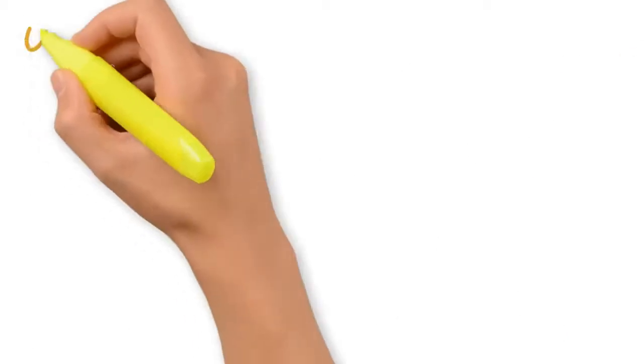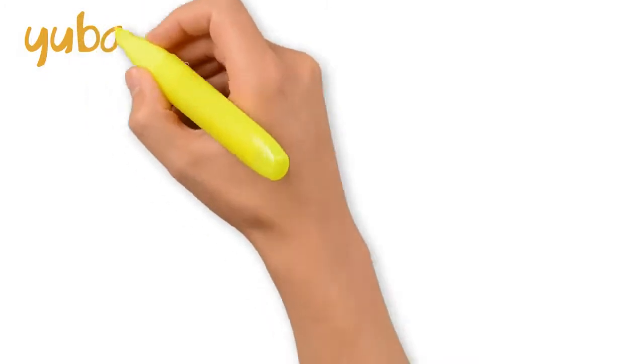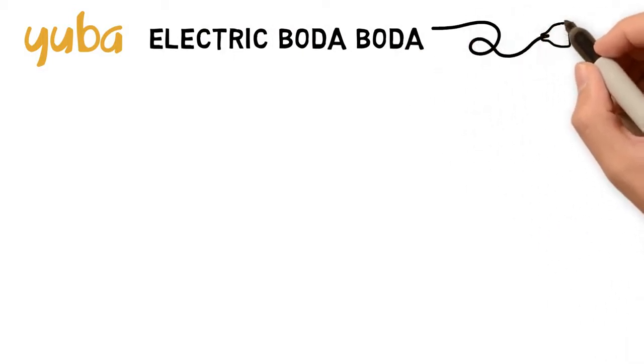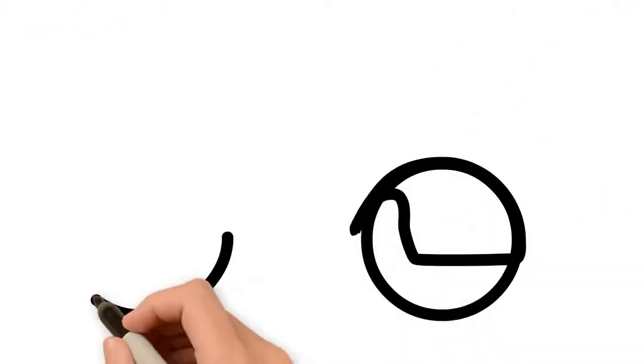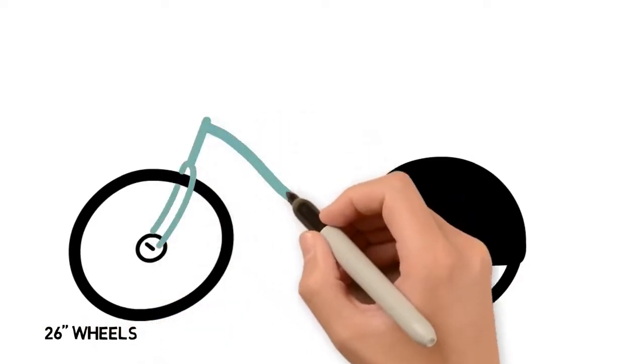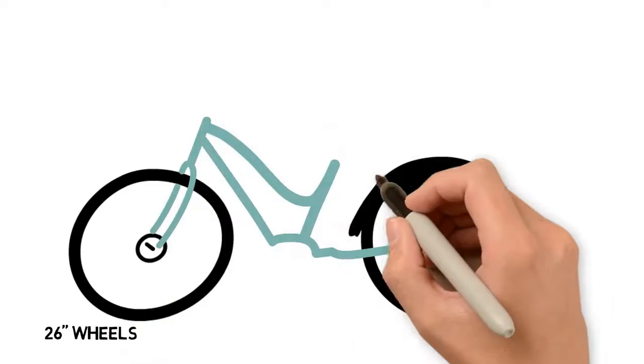I found my long tail at Yuba Bicycles, a California brand specializing in carrying cargo. I decided on the latest electric version of Yuba's Boda Boda. It's a compact long tail with 26 inch wheels. You can choose between a step through or step over frame and it comes in two colors.